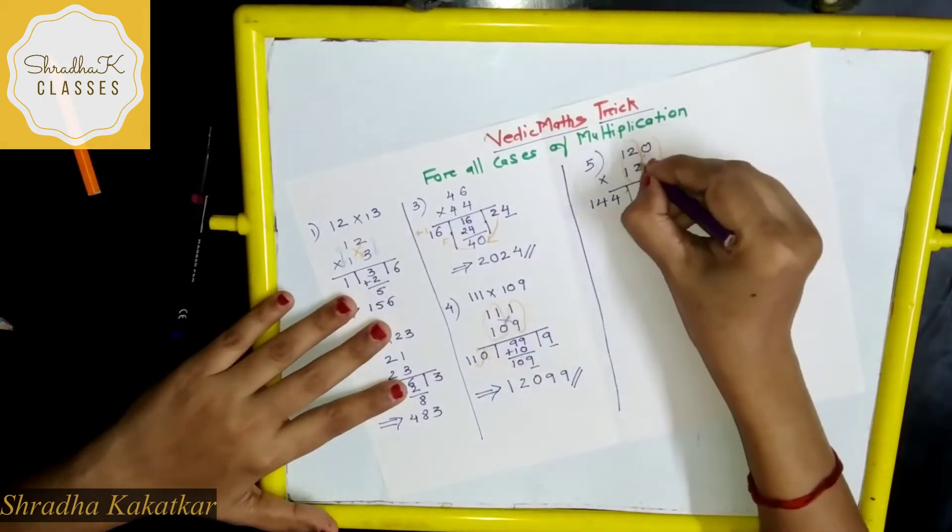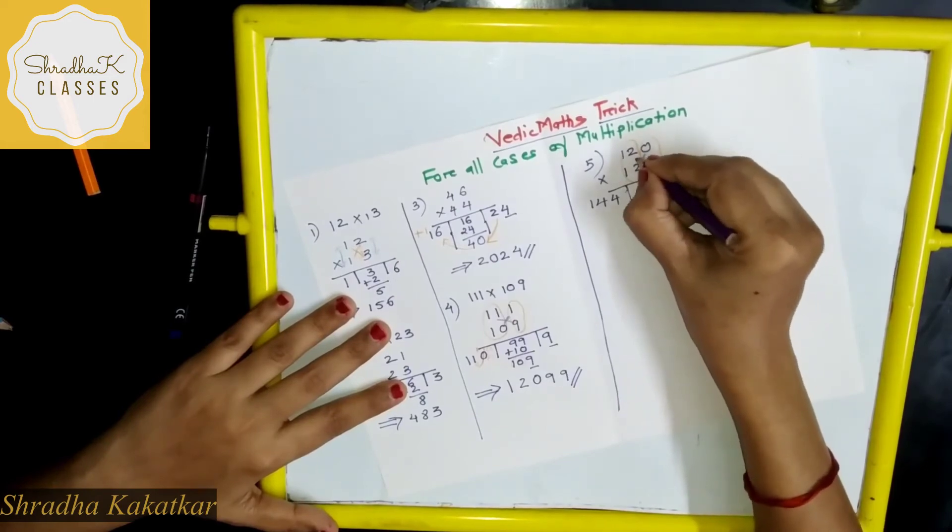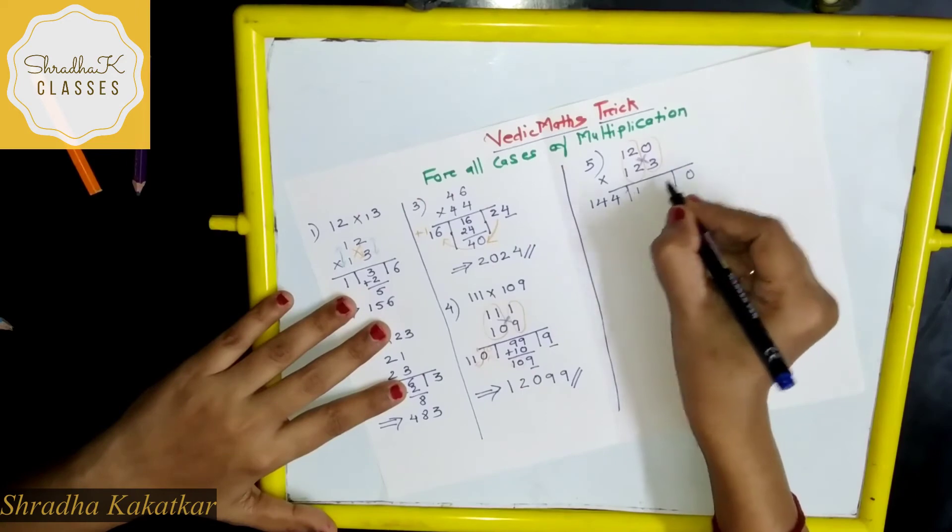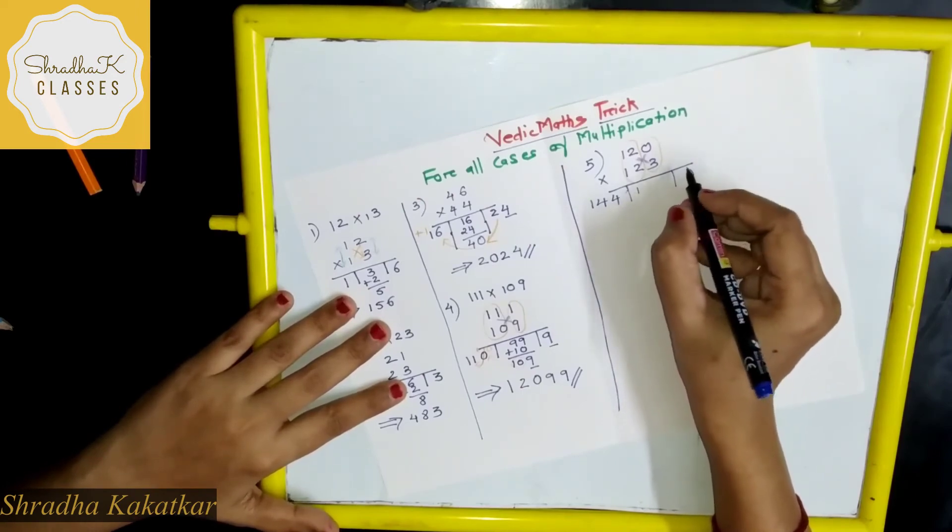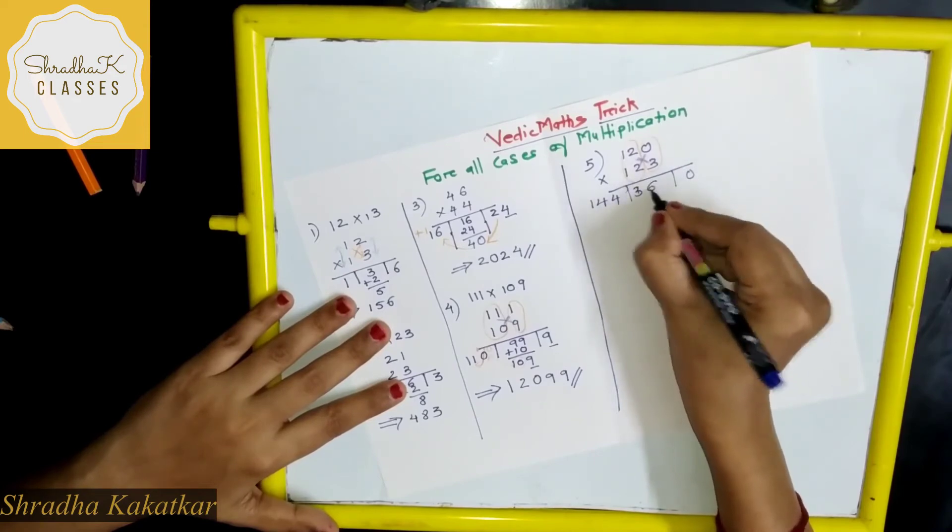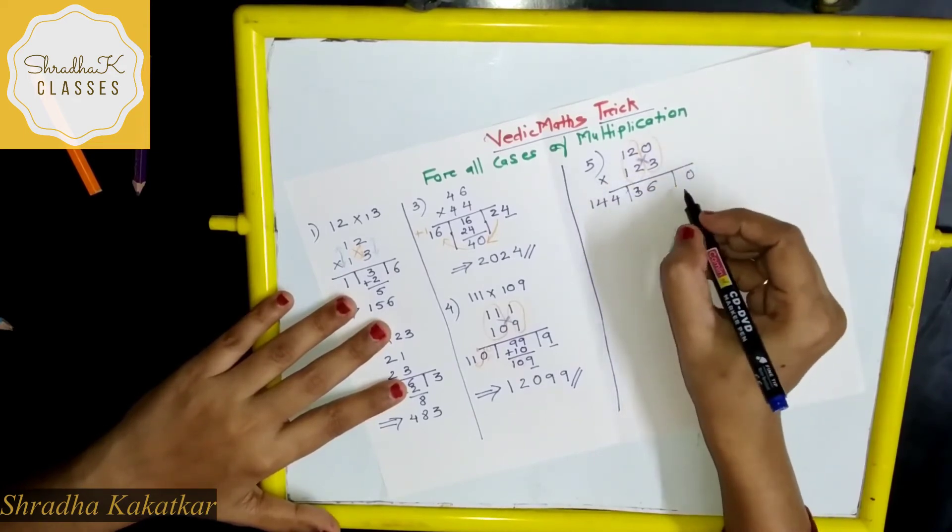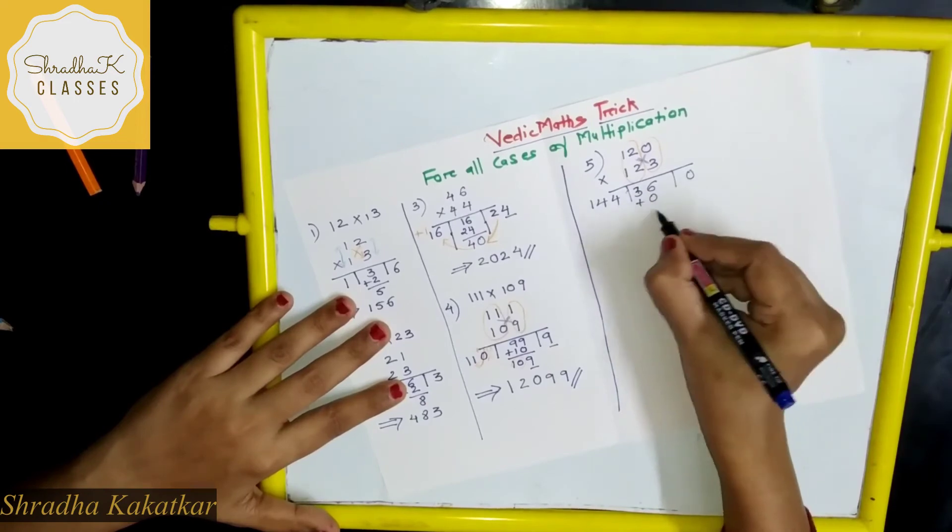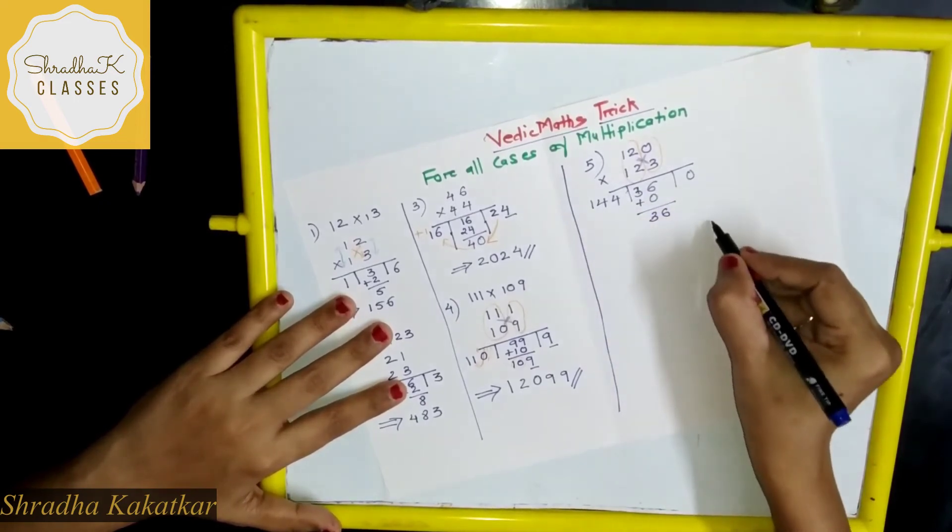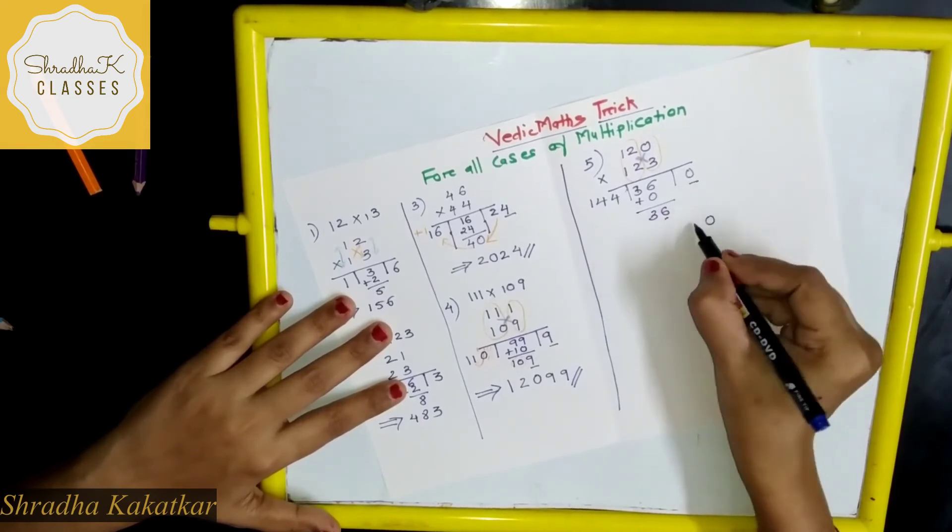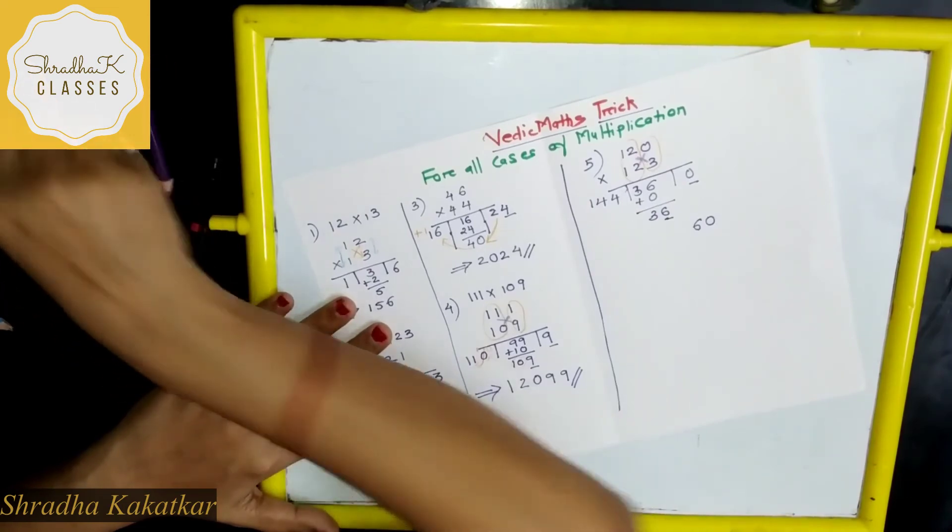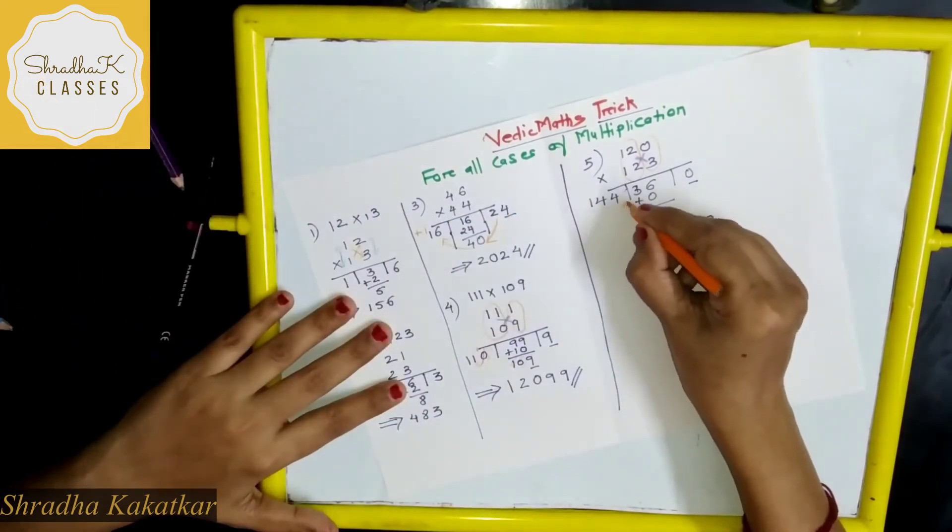Then cross multiply. 12, 1. Sorry, cross multiply. This will become 36. And 0. 36. Now this 0 right as it is. 6 right as it is. This 3 will be carried forward. 3 will be carried forward.